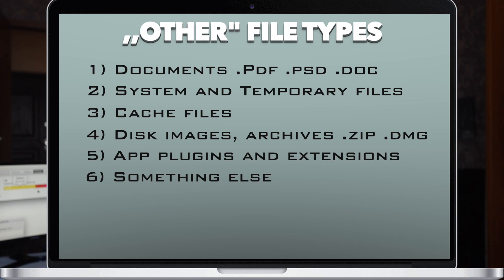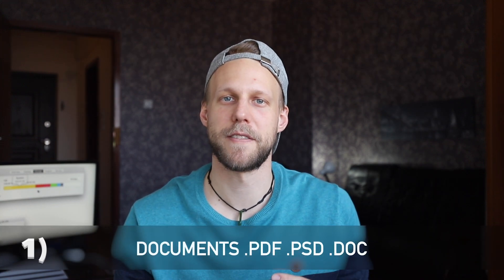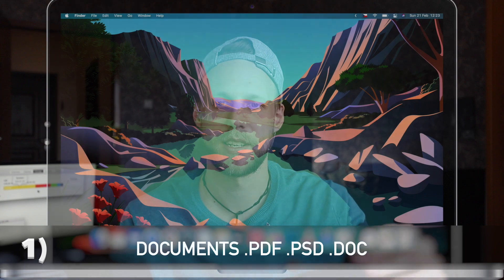Let's start by clarifying what file types are considered 'other'. On screen you can see the categories and file extensions which fall into 'other' — we'll talk about each of them closely and try to find some of these files. The good thing is that you can search your entire Mac not only by file name but also by file type.